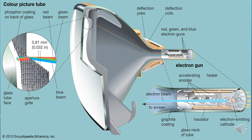Here you can see the diagram. There is the electron gun — red, green, and blue electron guns are there. In detail: electron-emitting cathode, then accelerating anodes. There is a heater, an insulator so heat can dissipate, a glass neck tube, graphite inside, and this is the electron beam. These are deflecting coils — the deflection yoke — and this is the magnetic field. Both generate a magnetic field from which the electron beam diverts. And here you can see a dot is created — this is basically a pixel.